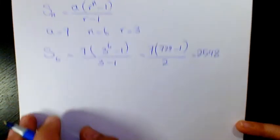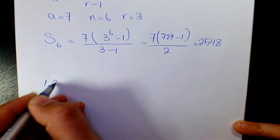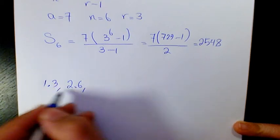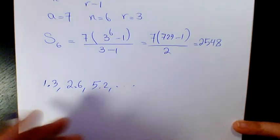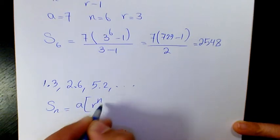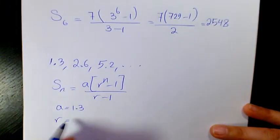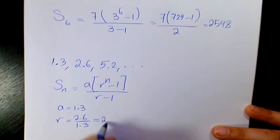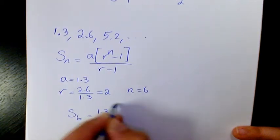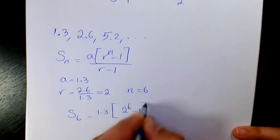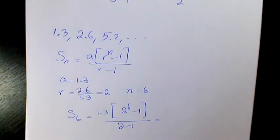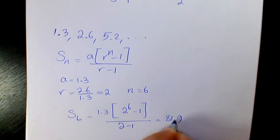Next: 1.3 + 2.6 + 5.2, and so on. Using Sn equals a times (r to the power of n minus 1) divided by (r minus 1): a is 1.3, r is 2.6 divided by 1.3, which is 2, and n is 6. So S6 equals 1.3 times (2 to the power of 6 minus 1) divided by (2 minus 1), giving 81.9.